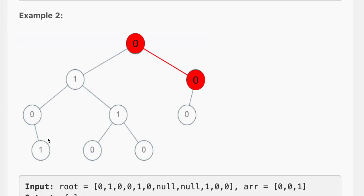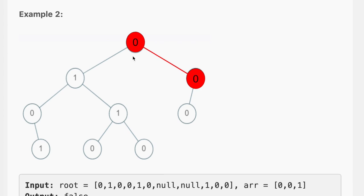In example 2, we are given this binary tree and the array is 0, 0, 1. We start from 0, move to 0, then we need 1 but there is no 1 here, so we return false. Checking the other path, we don't even have a second 0, and after that we check for 1 which is also not there, so we return false.